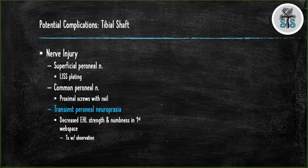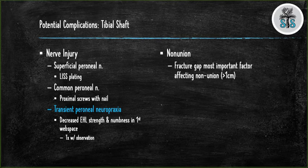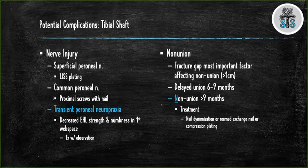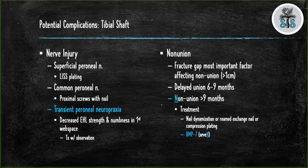The patient can develop a transient peroneal neuropraxia — decreased extensor hallucis longus and numbness in the first web space — which will resolve with time. Nonunions can occur; the most important factor is a fracture gap greater than one centimeter. Delayed union is when fracture healing has not occurred in six to nine months. Nonunion is when the fracture hasn't healed by nine months. Treatment options include dynamizing the nail, removing the nail and re-reaming with an upsized nail, or compression plating. For bone graft in nonunions, use BMP-7 — seven ends in N for nonunion.